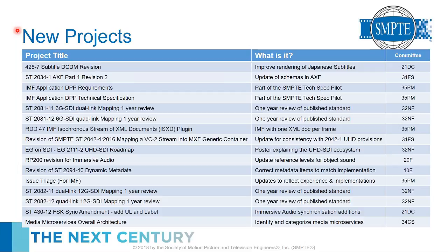Each standard we publish has a one-year and a five-year review. There is a standard called the Archive Exchange Format AXF — SMPTE ST 2034 Part 1 — which is having its second revision to update some of the schemas. We'll talk more about that when we go into the 31FS review.